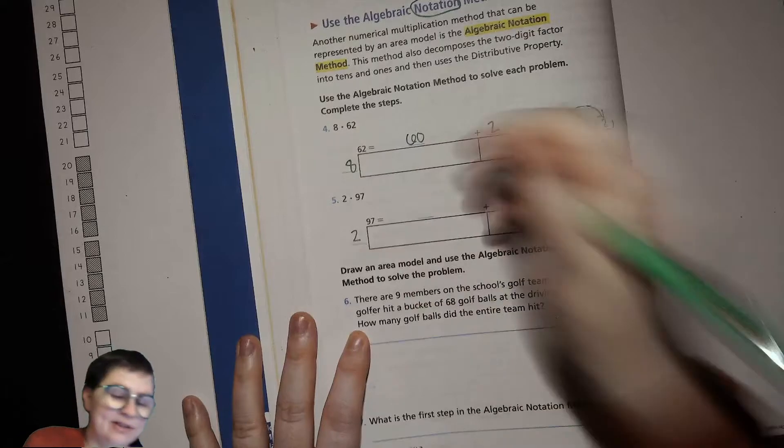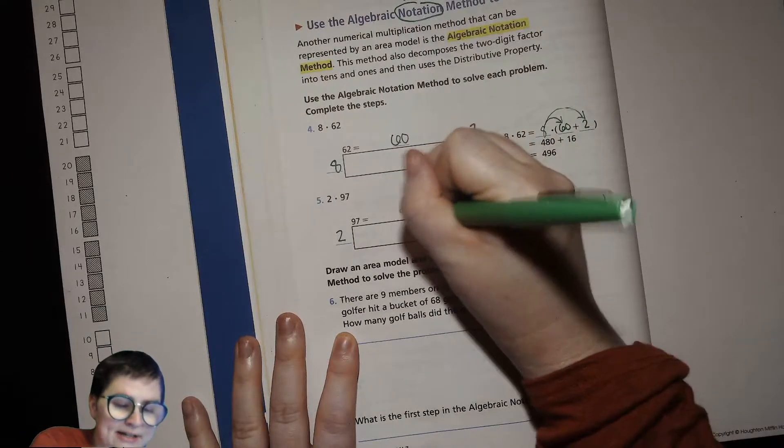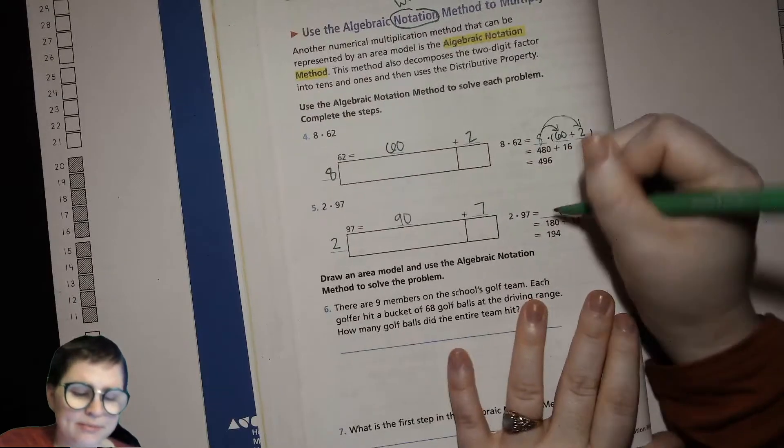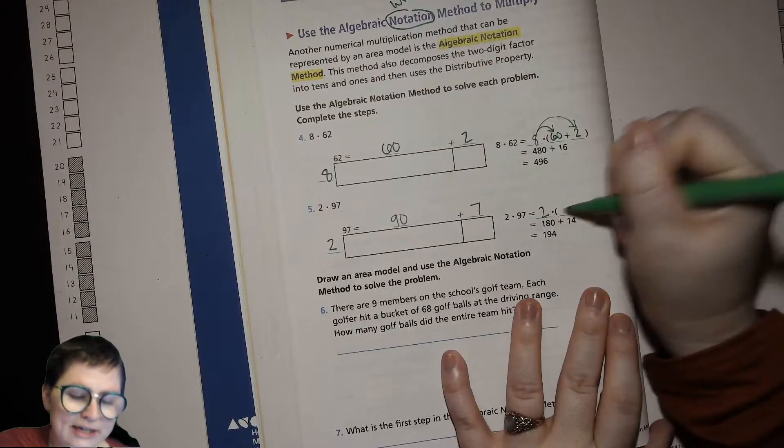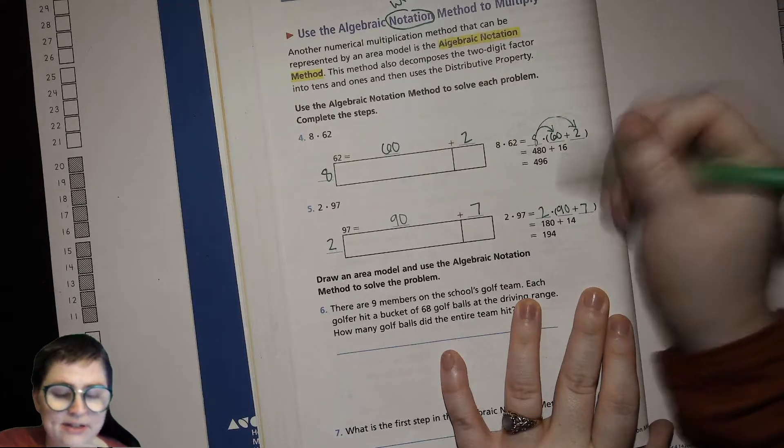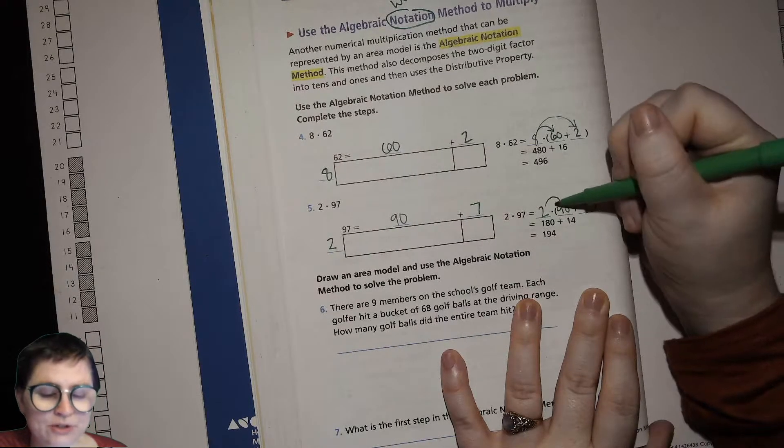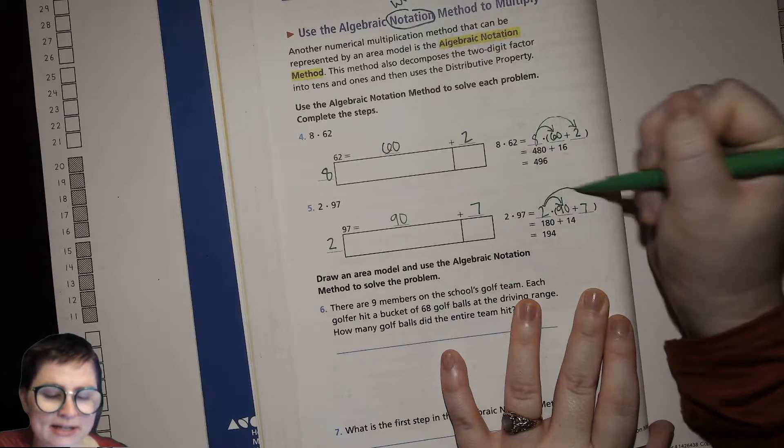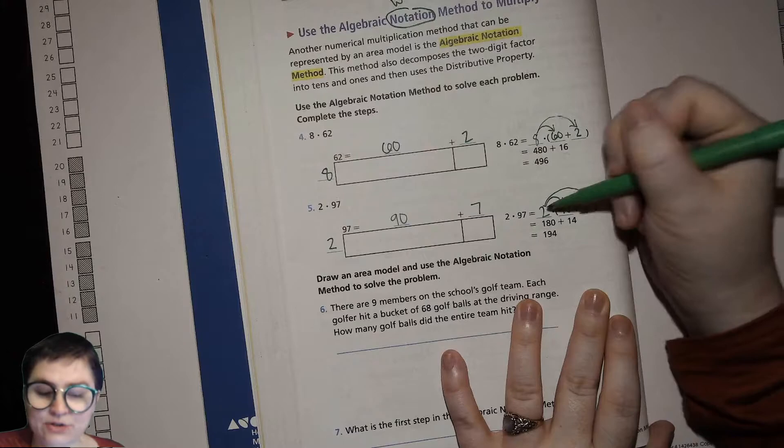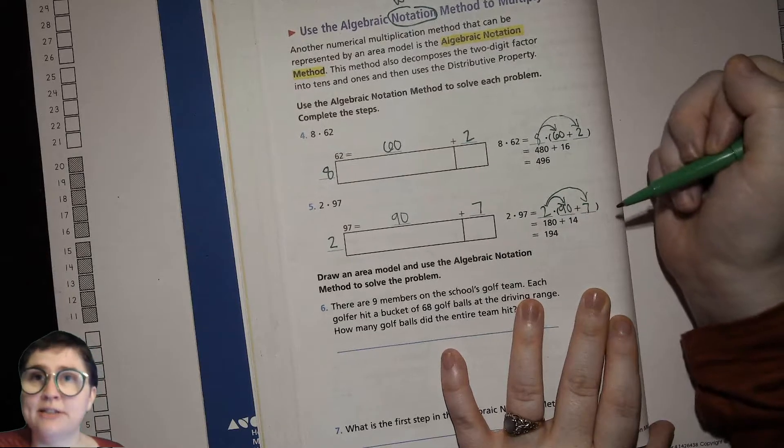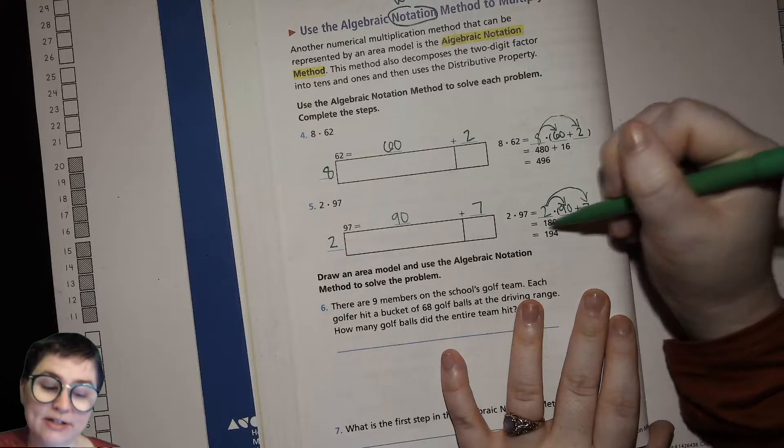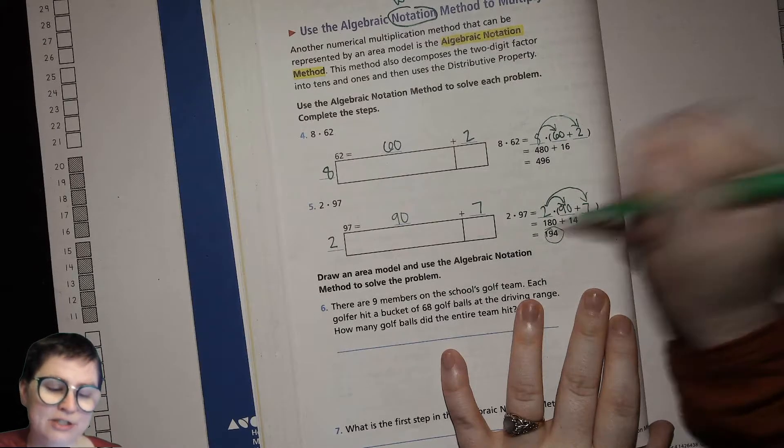I'm putting my single digit factor on that side, breaking up my 97 into the tens and ones, so 90 and 7. Then I will set up my equation so 2 times 90 plus 2 times 7. I'm going to distribute my 2 to everybody, so 2 times 90 is 180 or 18 tens, 2 times 7 is 14, adding those partial products up to our full product which is 194.